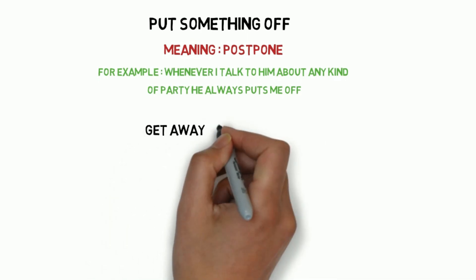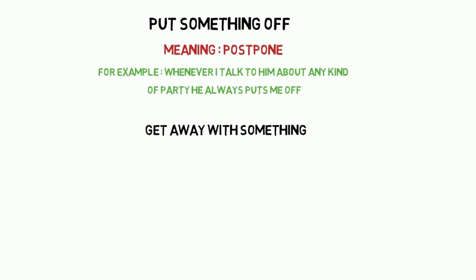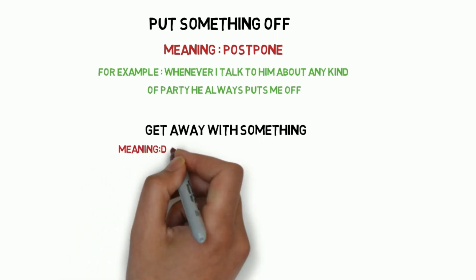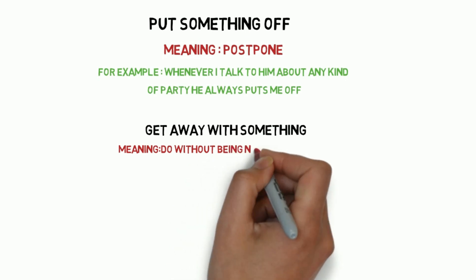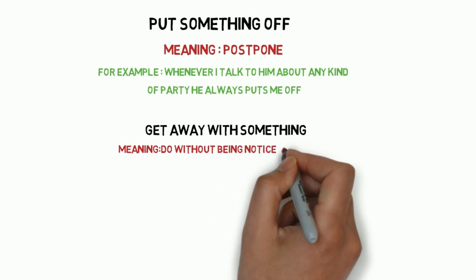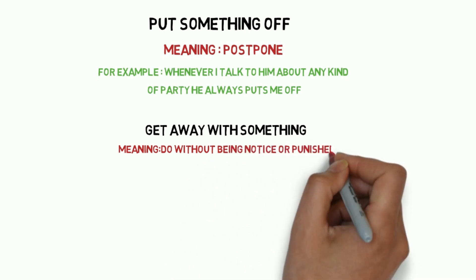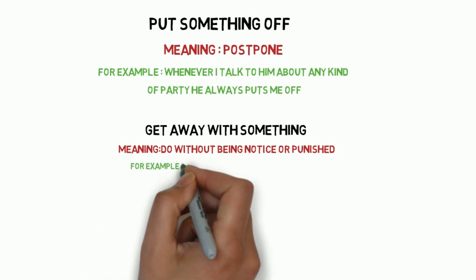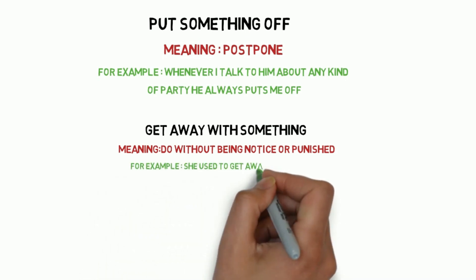Next one is 'get away with something,' which means to do something without being noticed or punished — bina notice mein aaye koi cheez karna. For example: she used to get away with her deeds.